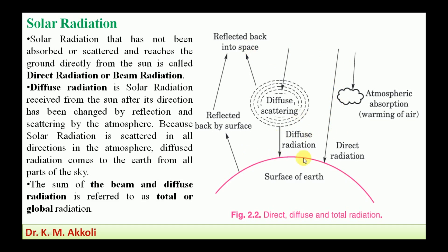The solar radiation that has not been absorbed or scattered and reaches the ground directly from the sun is called direct radiation or beam radiation. Diffuse radiation is solar radiation received from the sun after its direction has been changed by reflection and scattering by the atmosphere. Because the radiation is scattered in all directions in the atmosphere, diffuse radiation comes to the earth from all parts of the sky.